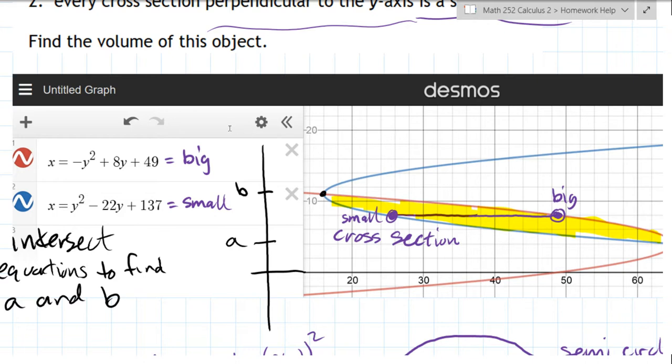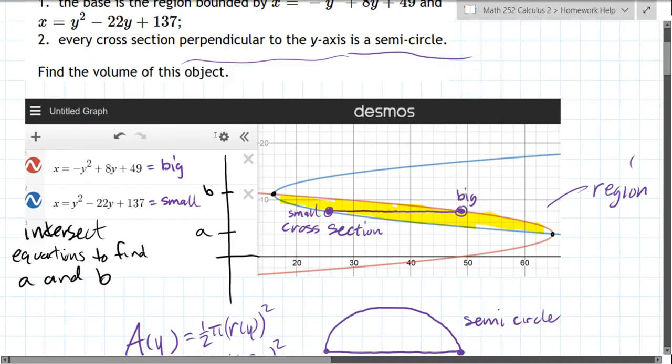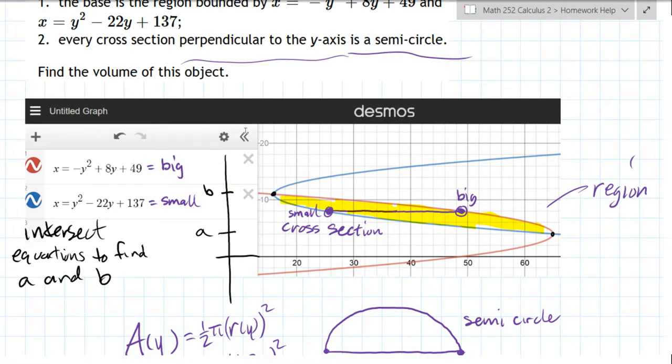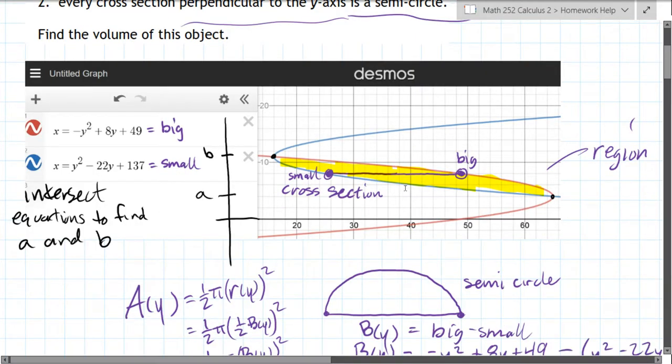And you can see there's one region right here that is actually bounded. All the other regions are infinite, so there's only one region. I highlighted that in yellow right there. Now we do need to find these two points. I did draw them in with little black dots here, but we need to find the actual coordinates of those. Desmos will tell them to you.